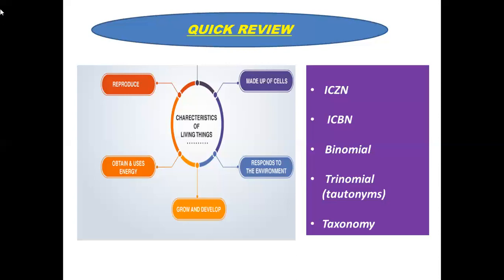After that we discussed about trinomial nomenclature, which includes genus, species, and subspecies. This was not seen for animals but in plants. We have talked about these total naming conventions. And about taxonomy, I have a brief definition which we will study elaborately.